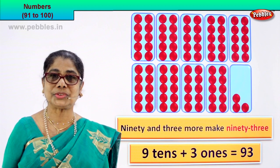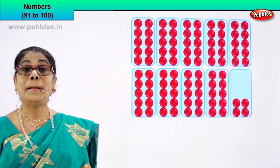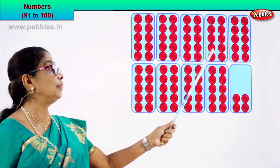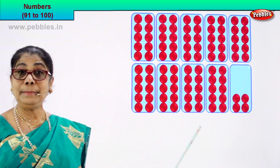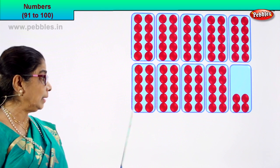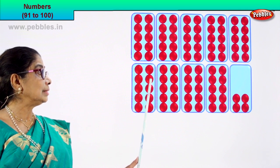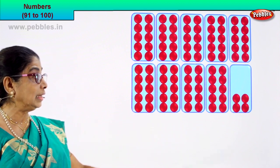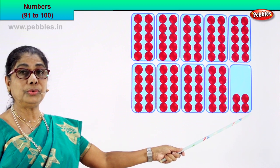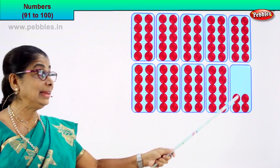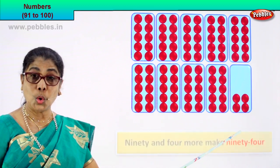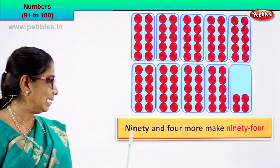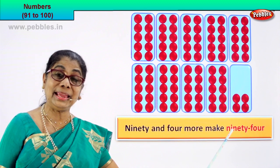Let's take the next boxes and find the numeral by counting. We have nine boxes of ten each. Let's count: 1, 2, 3, 4, 5, 6, 7, 8, 9, 10 — yes, ten in each box. Nine boxes of ten is 90. Count on: 91, 92, 93, 94. So 90 and four more make 94.